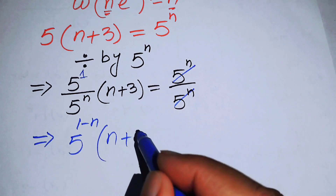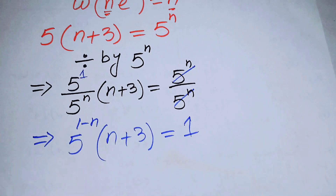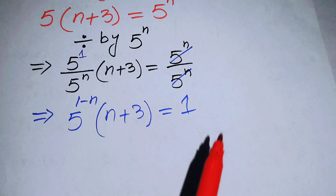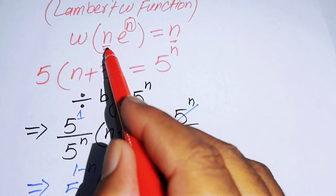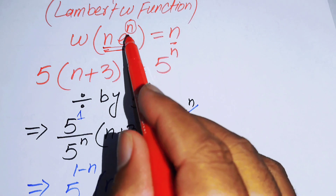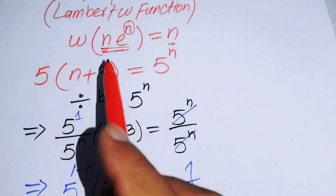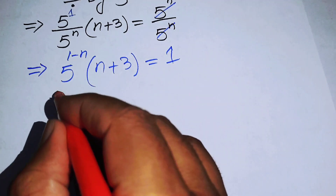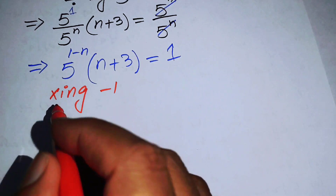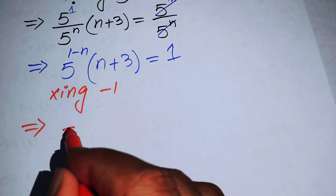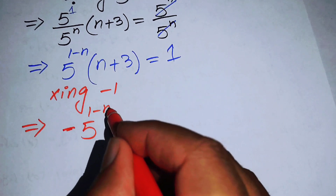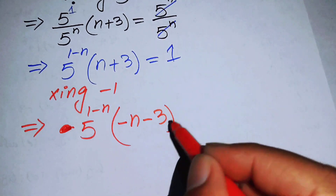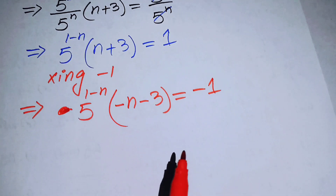After this step we multiply both sides by minus 1, in order to make the function match the form of e to the power of n multiplied by n. After multiplying by minus 1, we get 5 to the power of 1 minus n times minus n minus 3 equals minus 1.